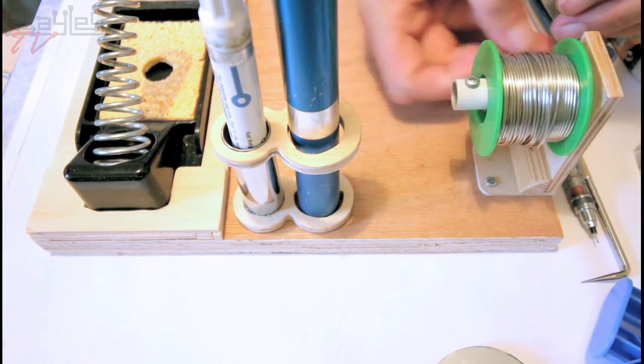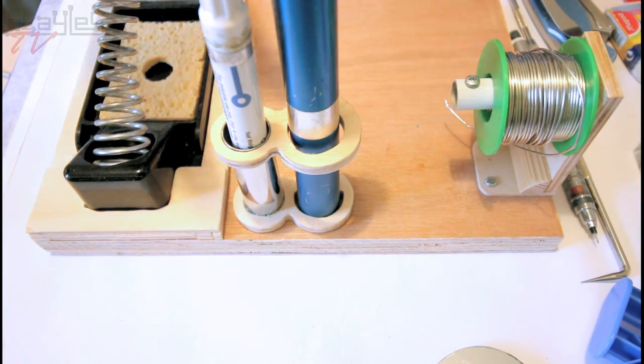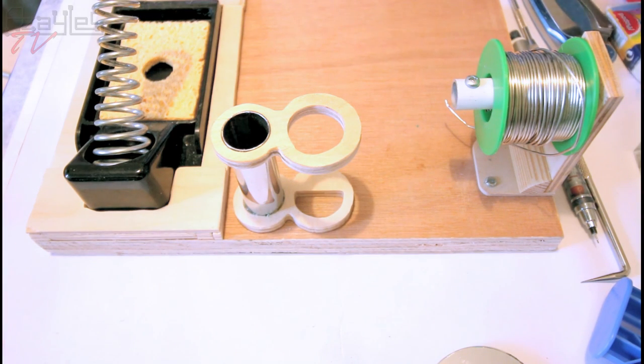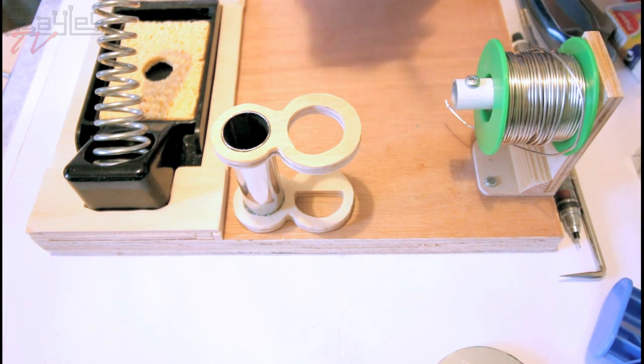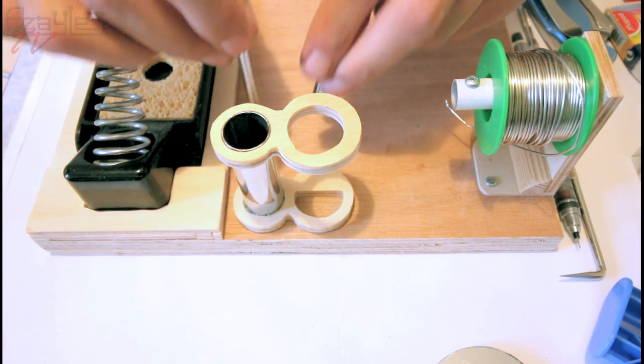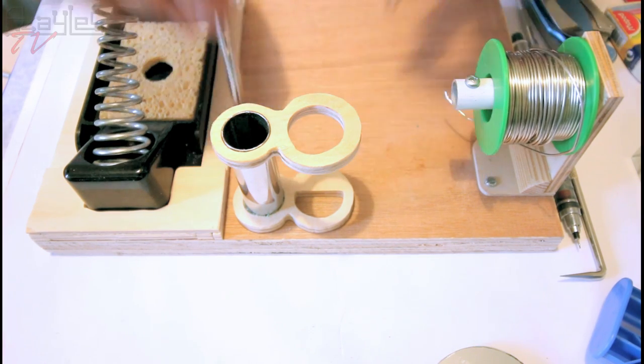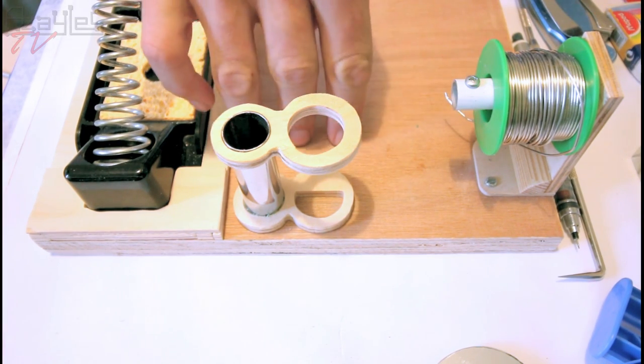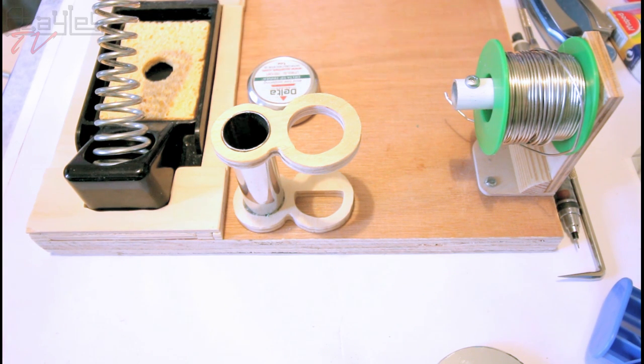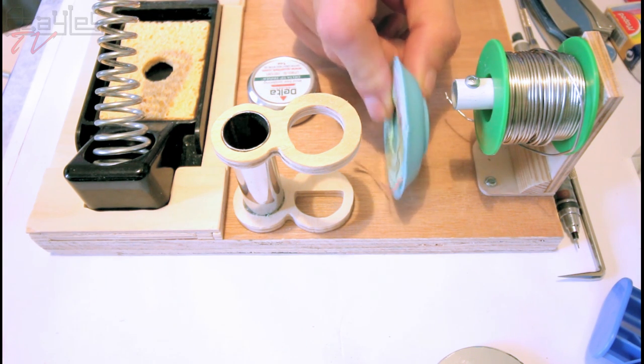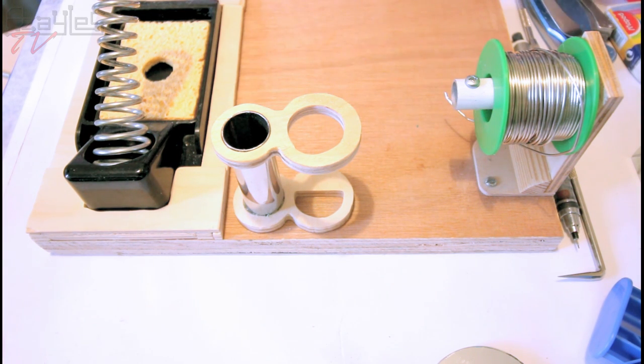Solder goes on there. So next job is to build a little stand for these spare tips. They'll sit down there like that. I'm going to make space for three tips and the tip cleaner needs to go here somewhere and the braid needs to go there. All right, let's get cracking with more making.